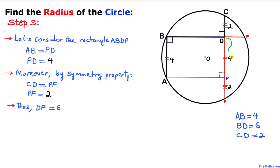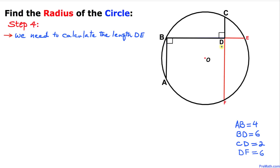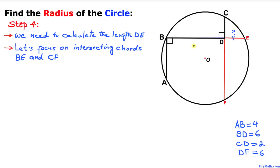Thus the total length of DF is going to be 4 plus 2, which is 6 units. In the next step we are going to calculate the length of side DE. Now let's focus on these two intersecting chords: one of them is BE and the other one is CF.